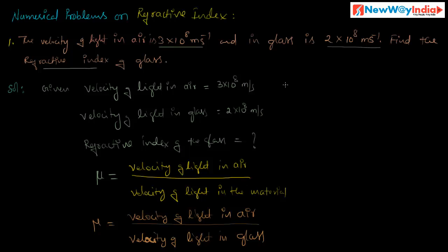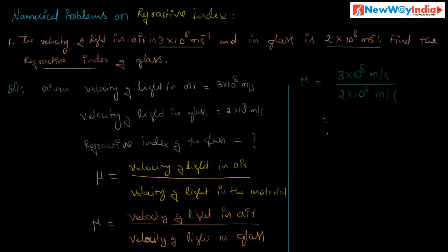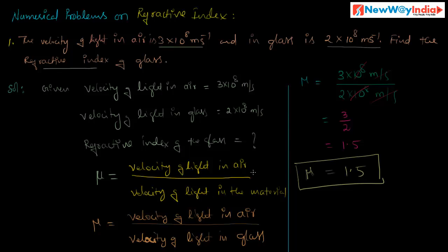Substituting the values: mu is equal to 3×10⁸ m/s divided by 2×10⁸ m/s. The 10⁸ units cancel out, giving 3 divided by 2, which equals 1.5. Therefore the refractive index of the glass, mu, is equal to 1.5. It has no units because it is a ratio of velocity of light in air to velocity of light in glass.